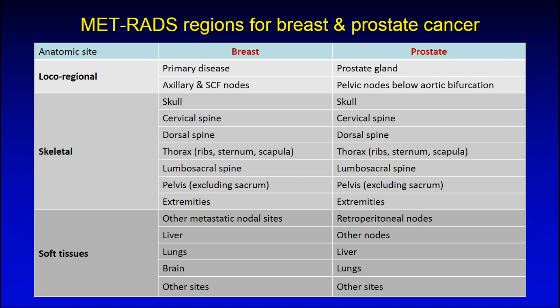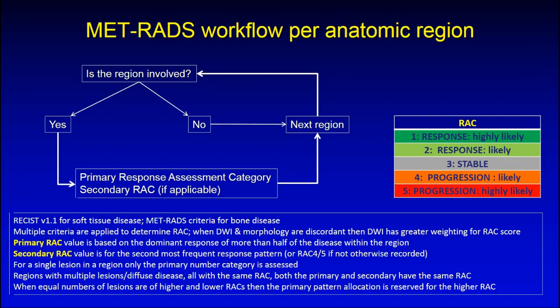For each region, you have to decide whether there is anatomical involvement or not — yes or no. If there is involvement, then in the response assessment setting, a primary and a secondary response assessment category (RAC) is allocated. The primary RAC is based on the dominant response of more than half the lesions within a region. The secondary RAC is for the second most frequent pattern. However, if there is a minor component of progression, it automatically becomes part of the secondary RAC.